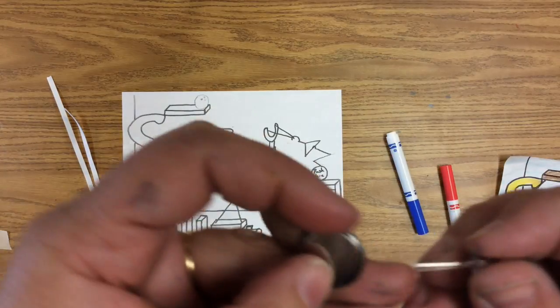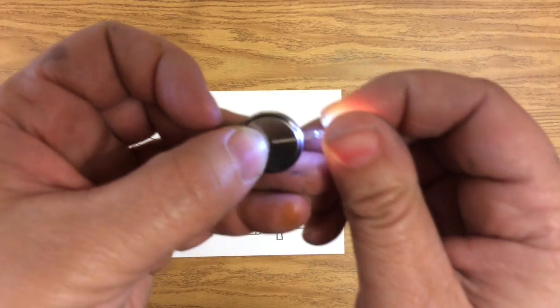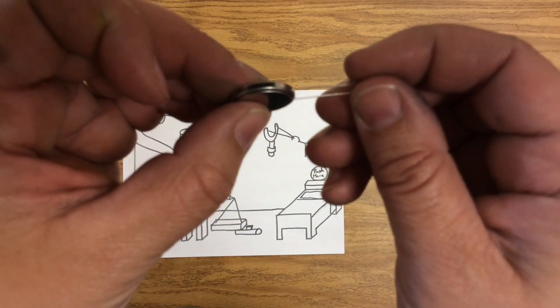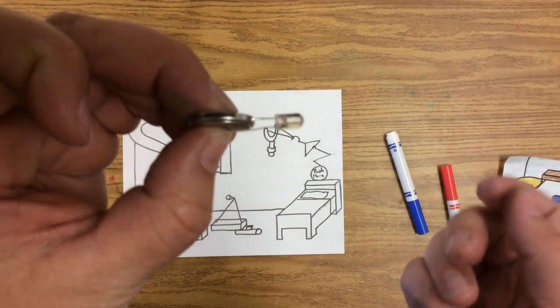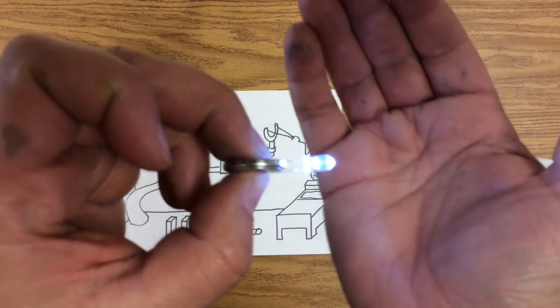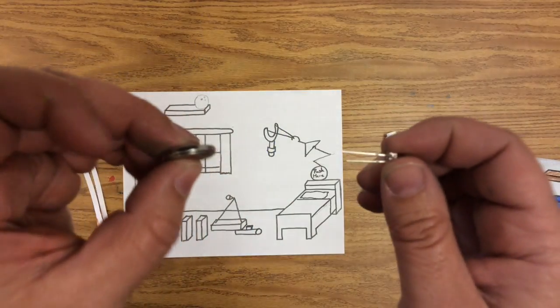If we put the shorter one there, it lights up. If we switch it, turn it around, it won't light up. See, the positive has to be on the positive side of the light bulb, and the negative on the negative side of the light bulb for that to light up.